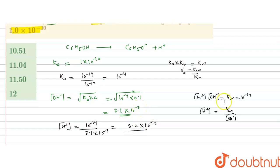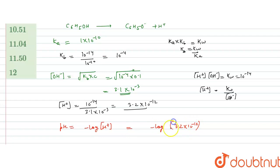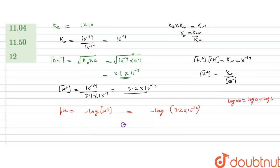This is the H⁺ concentration. Now we calculate pH. pH = −log[H⁺] = −log(3.2×10⁻¹²). Using the identity log(AB) = log A + log B, this becomes −log 3.2 − log(10⁻¹²).